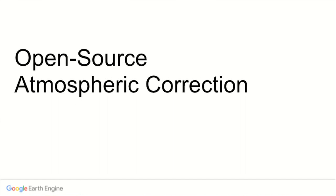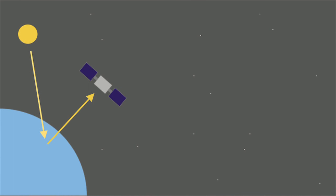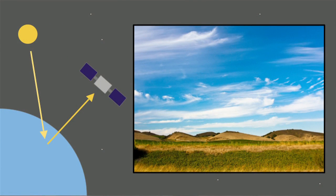This talk is about open source atmospheric correction. Most Earth-observing satellites measure reflected sunlight to create images. The atmosphere interacts with this sunlight, which is why the sky is blue. Although beautiful, this is a problem because the signal reaching the satellite is a mixture of information from the Earth's surface and from the atmosphere.